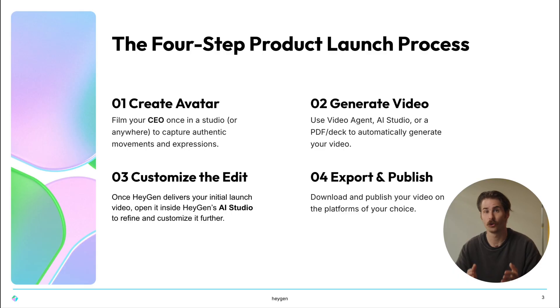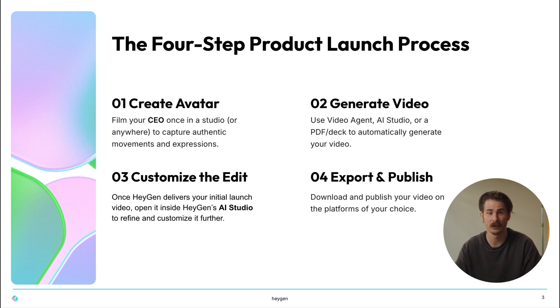So to recap: for your next product announcement video, all you need to do is first create your CEO's digital twin, then generate your video with Video Agent, AI Studio, or a PDF upload, then customize it with graphics, captions, and visuals, and finally publish, export, and translate globally. You now have a consistent, authentic, global-ready video engine powered entirely by your CEO's digital twin. Film once, scale forever — that's how we do it at Heijin, and how you can do it too.